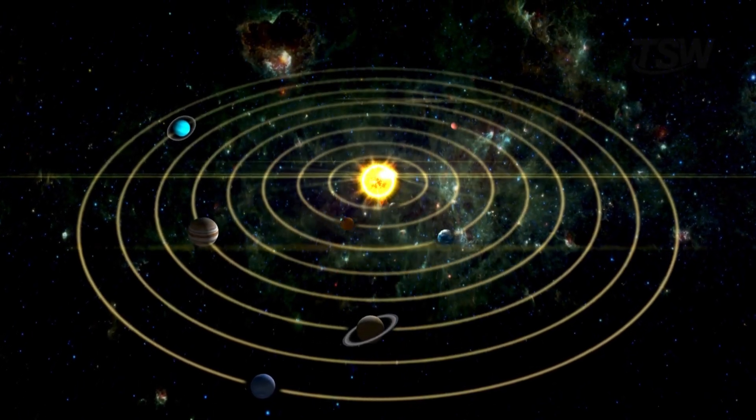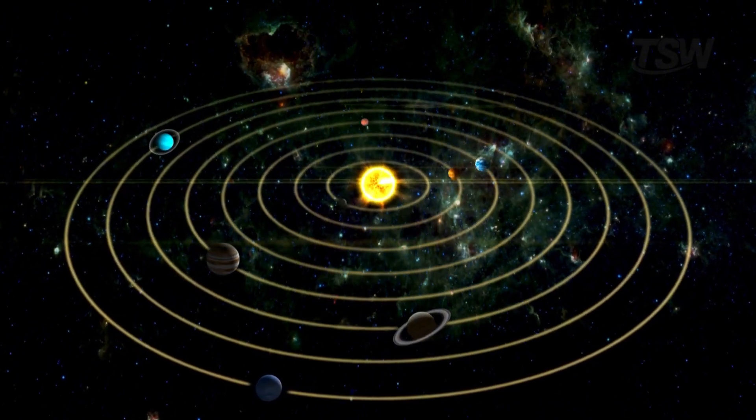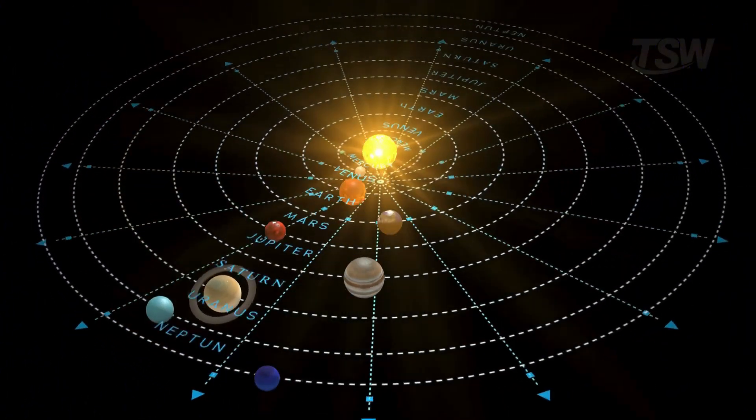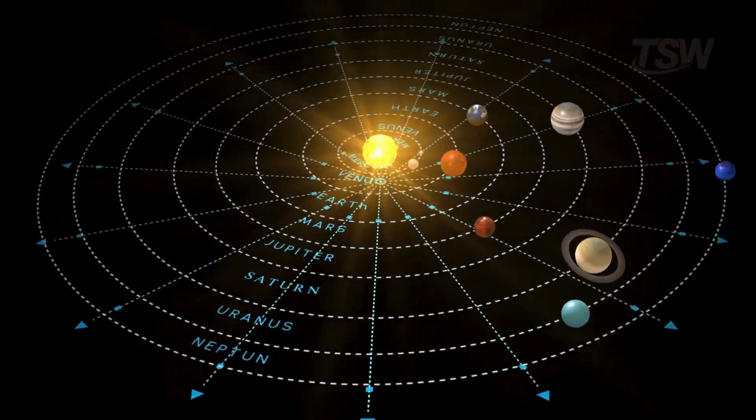Throughout our lives, we learn that the solar system is a set of planets circling the sun in perfect, flat rings, all aligned on the same plane as if they were floating on an invisible disk.